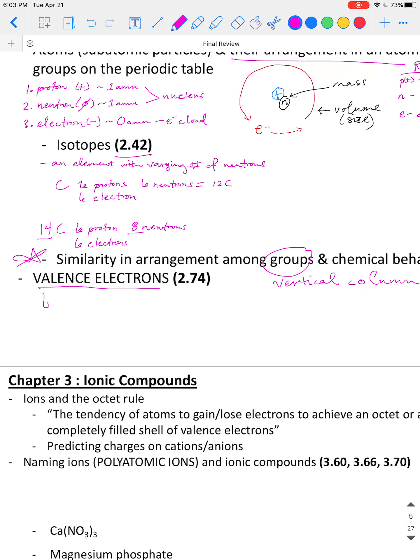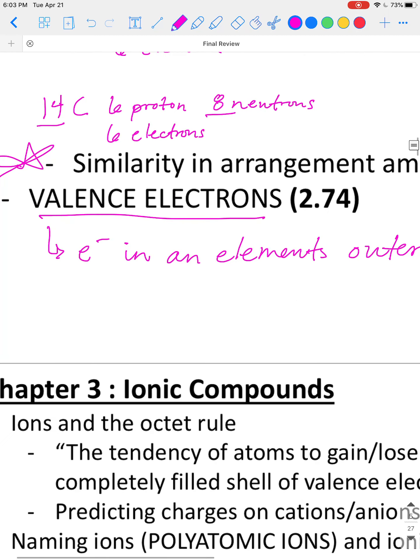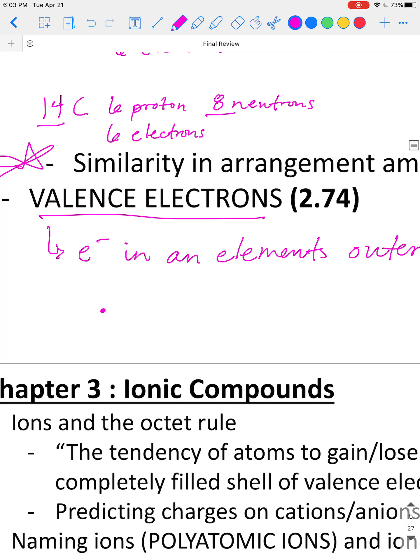But the reason why that chemical behavior is the same for vertical columns all has to do with valence electrons. So these are the electrons in an element's outer-most energy shell.